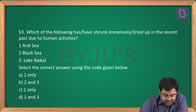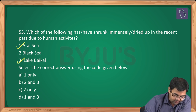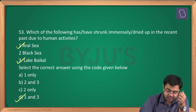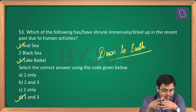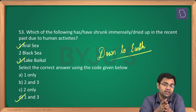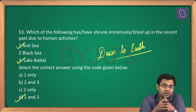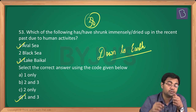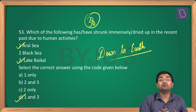Question number 53: which of the following have shrunk or dried up in recent past due to human activities? The answer is Aral Sea and Lake Baikal — option D, 1 and 3 only. The instructor notes this was covered in Down to Earth magazine, and observes that many geography and environment questions in this year's paper appeared in Down to Earth magazine issues from the past one to one-and-a-half years.